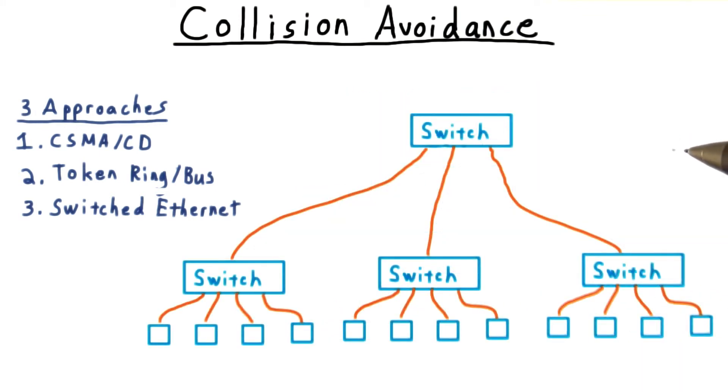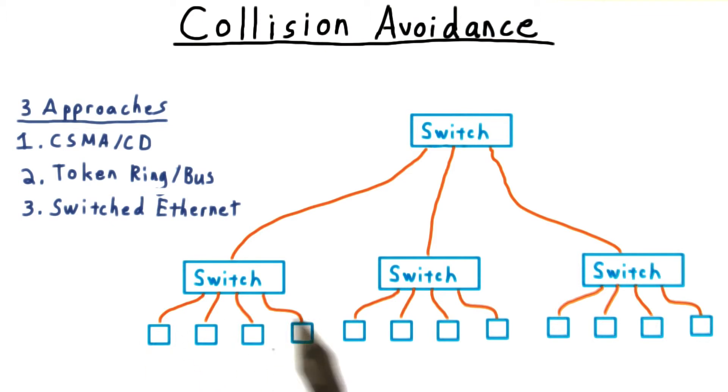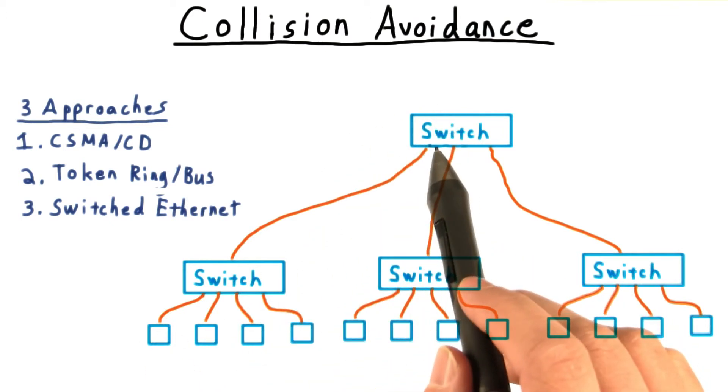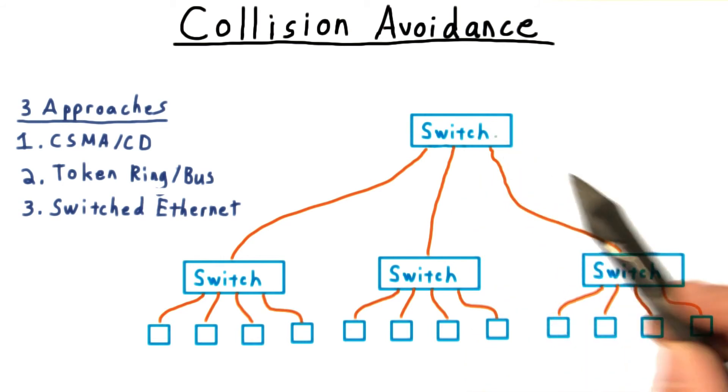Once we run out of ports, we can begin to arrange switches in a hierarchy, like so. In our top level switch, MAC addresses for this subtree would all map to port 1. Those in this subtree would map to port 2, and those in this subtree would map to port 3.